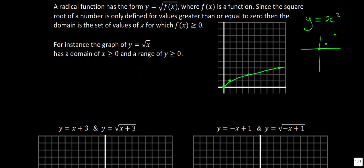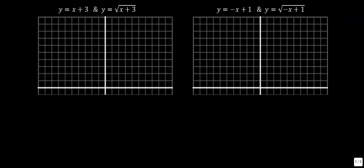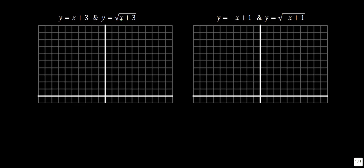Let's take a look at how radical graphs are related to linear graphs. If we take a look at y equal to the square root of x plus 3, we can see this is a radical function, and the function right next to it — y equals x plus 3 — is a linear function; we just haven't taken the square root of it. Let's look at how these functions are related. Starting with the linear function: it's in y equals mx plus b form, where the slope is 1 (rise over run) and the y-intercept is at 3. Graphing it in pink, we get a y-intercept at 3 and then go up 1 over 1.